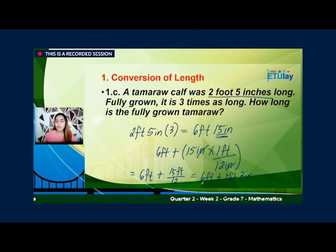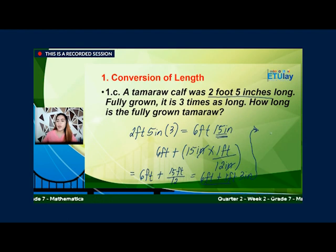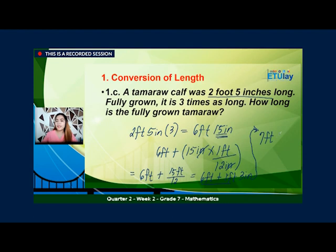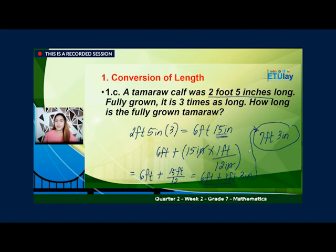So si 6 feet and 1 foot, pwede na din natin siyang pagsamahin. So 6 feet plus 1 foot, that would be 7 feet and 3 inches. So ito na yung haba ng fully grown tamaraw — 7 feet, 3 inches long.